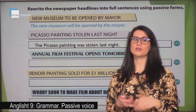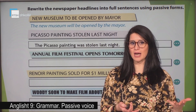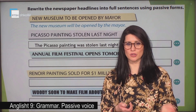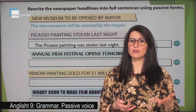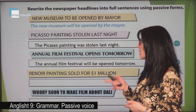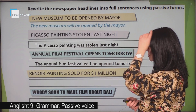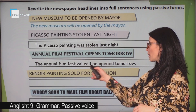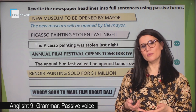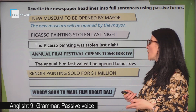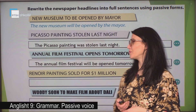It's tomorrow — so we have the word 'tomorrow', a time expression referring to the future. We need the verb 'to be' in the future. The annual film festival will be opened tomorrow. Have a look at the verb — how do we form the future in passive? Will be plus the past participle of the verb.